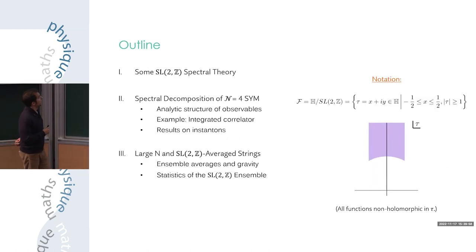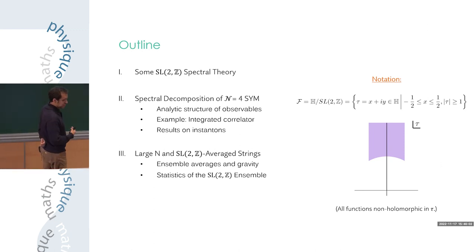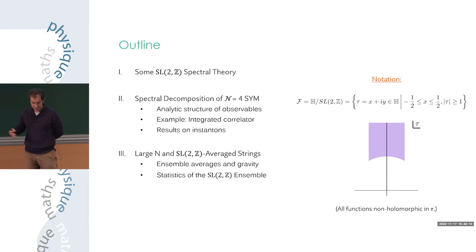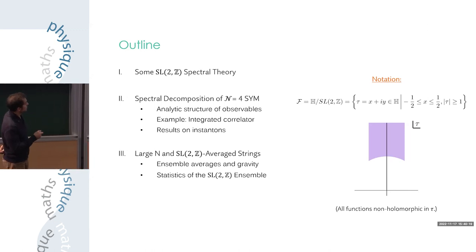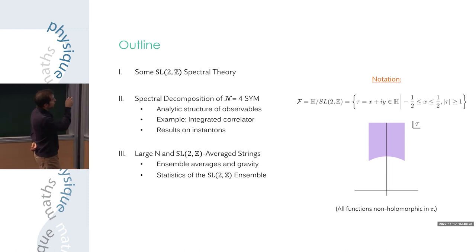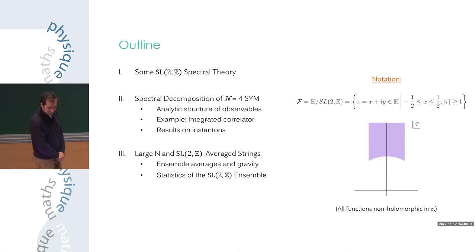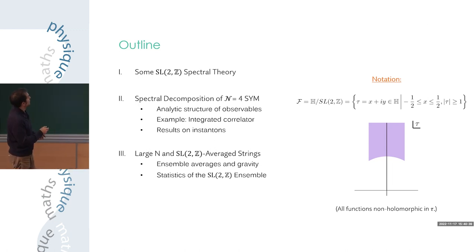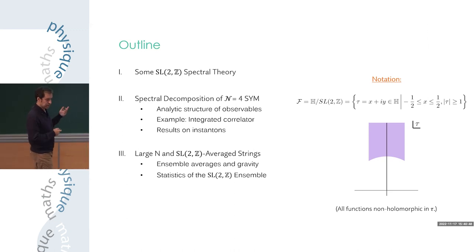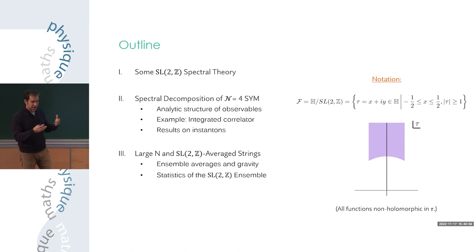Here's the outline: first I'll introduce the aspects of SL(2,Z) spectral theory that we'll need, then apply it to N=4 super Yang-Mills. Then I'll discuss the integrated correlators — the explicit observables — and finally transition to large N and the relation with string theory and the average over the string moduli space. A bit of notation: tau = x + iy, so y = Im(tau), which is essentially 1/g_YM^2. Large y is small g, the perturbative regime. Functions of tau are not holomorphic.